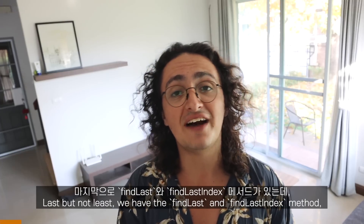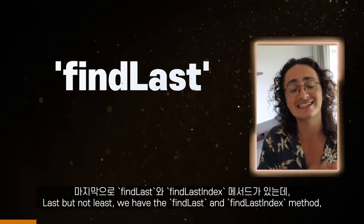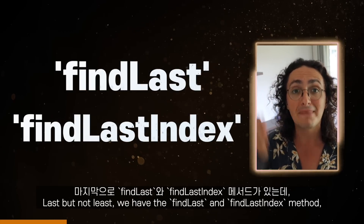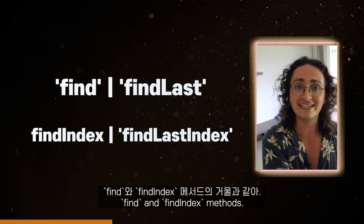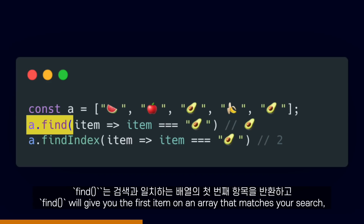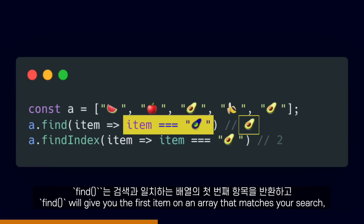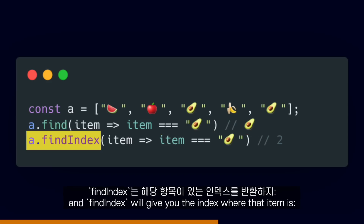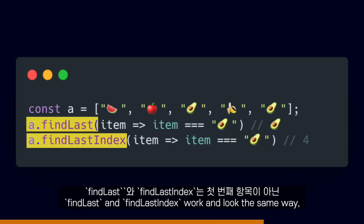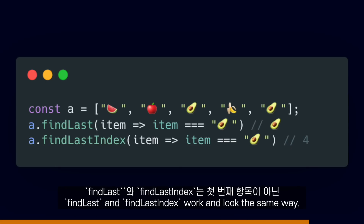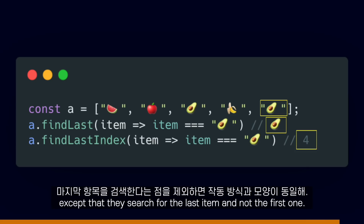And last but not least, we have the findLast and findLastIndex methods. They are a mirror to the already existing find and findIndex methods. Find will give you the first item in an array that matches your search, and findIndex will give you the index where that item is. findLast and findLastIndex work and look the same way, except that they search for the last item and not the first one.